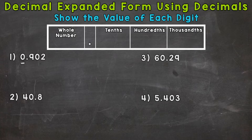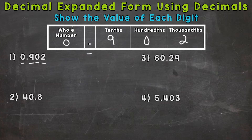In this case, we have a zero, which shows that we do not have a whole number. Then we have a decimal, and then the tenths place. So we have a nine in the tenths, a zero in the hundredths, and a two in the thousandths. When it comes to expanded form, we don't need to worry about the zeros. So we have two digits for number one that we need to show the value of. We have the nine, and again, we're going from left to right.